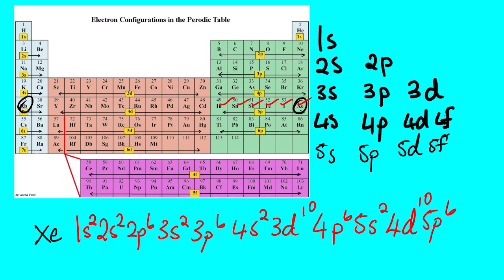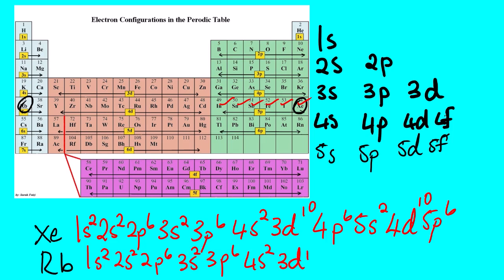I hope you got that one correct. Now for rubidium: 1S², 2S², 2P⁶, 3S², 3P⁶, 4S², 3D¹⁰, 4P⁶, 5S¹. We can verify: xenon is element number 54, so the sum of the exponents must give 54. And rubidium is element number 37, so the exponents will give you 37.